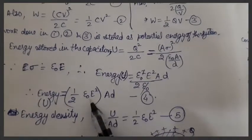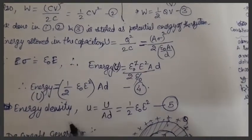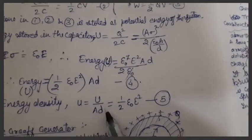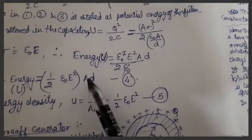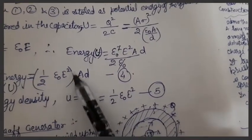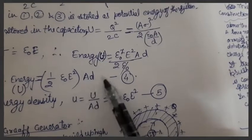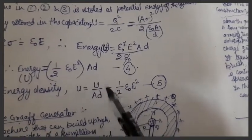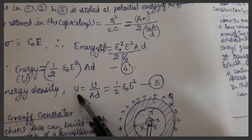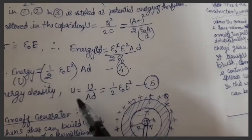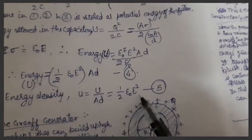This is energy. If we want to determine energy density, energy density means energy upon volume of the capacitor plates. Area of capacitor plates is A and d is the separation, so volume of the region between the capacitor plates is A into d. We divide energy by volume to get energy density, that is small u. If I divide this term by Ad, it gets cancelled and I get energy density.